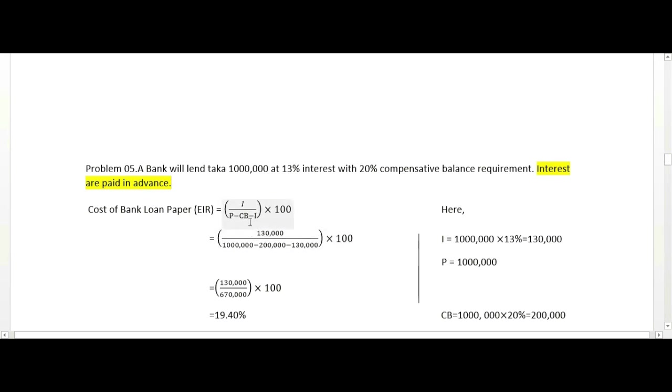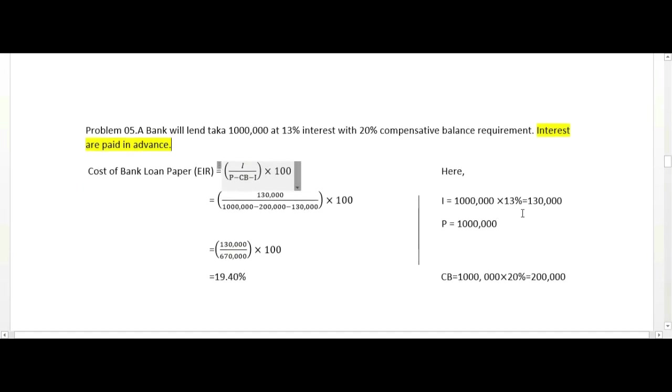When interest is paid in advance, we need to adjust the formula. The EIR becomes interest divided by principal amount minus compensating balance minus interest. Since interest is deducted upfront, we subtract I from the denominator.